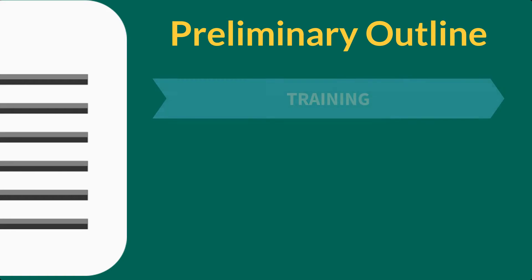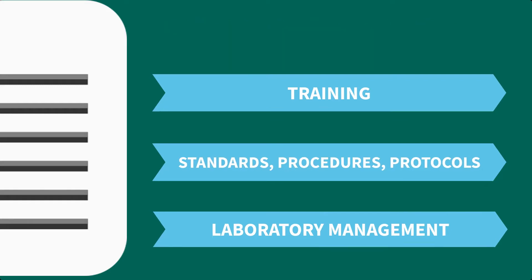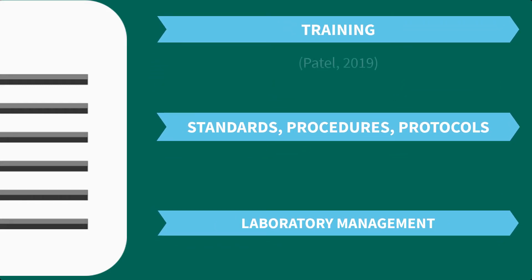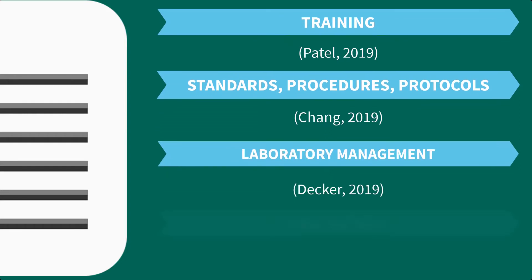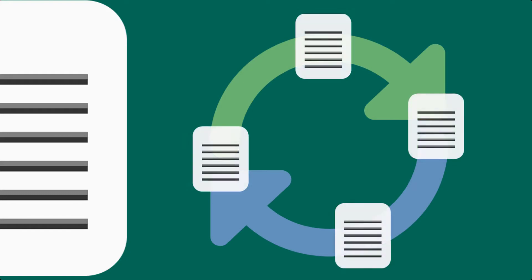For example, I'm not a phlebotomist, but I'm going to take an educated guess that training, specific standards, procedures and protocol, and laboratory management probably have some kind of role to play with regard to preventing contamination. So each of these areas will become a section in my outline, and any time I come across a study whose findings fall into one of these areas, I'll take notes about it in that section. If I come across a study that doesn't fall into one of my categories, I'll just create a new section in my outline and put it there. Remember, you still need to be sure that you don't just summarize each study — you'll need to tie those individual studies together in your review.